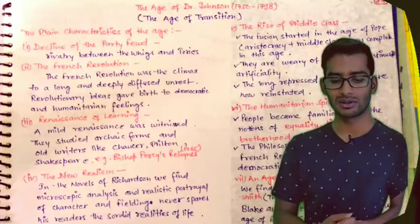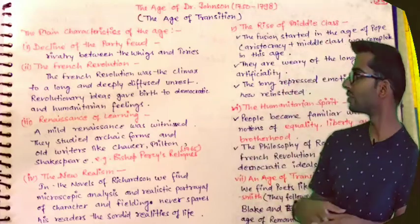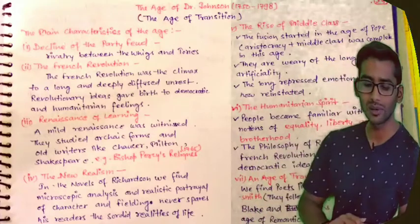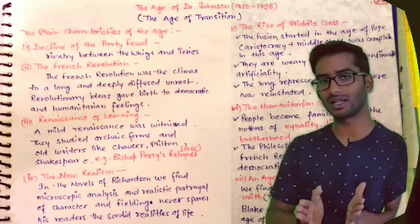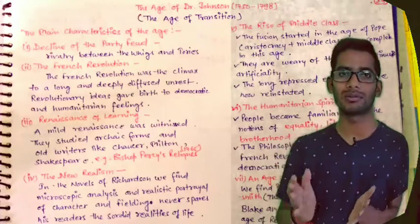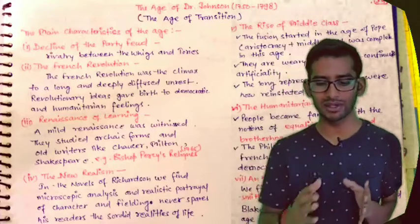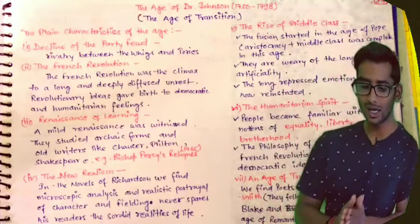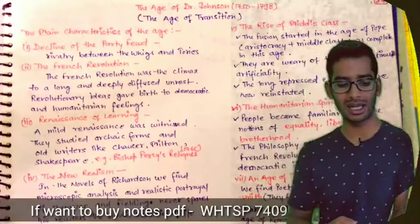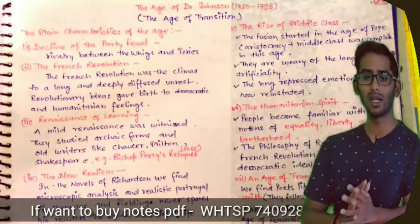Now we are discussing the Age of Dr. Johnson, from 1750 to 1798. At 1798, we know this is the year when the Romantic period started. So we will take this period from 1750 to 1798, and this is also called the Age of Transition. Now, the main characteristics of the age — first of all, as I always tell you, it is important to know the background of the age and what was going on in the social context.